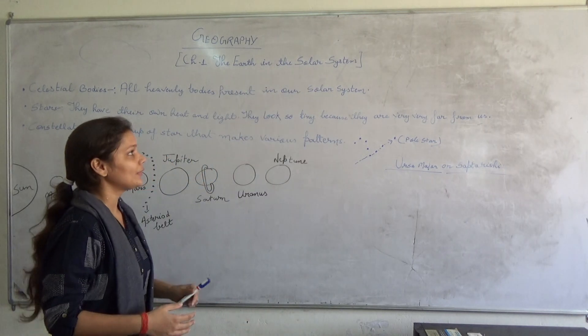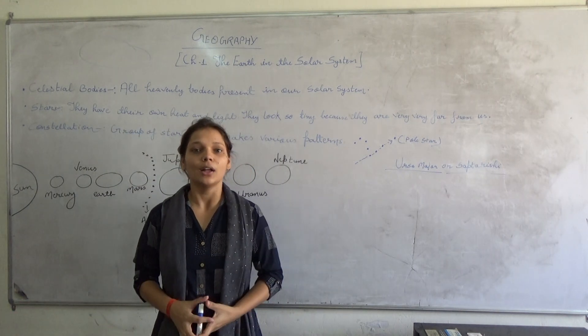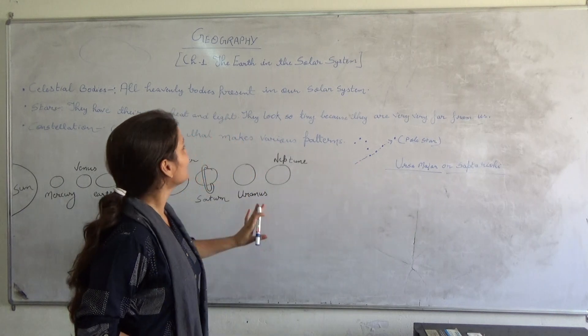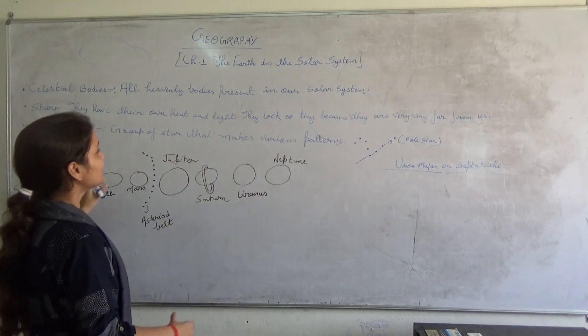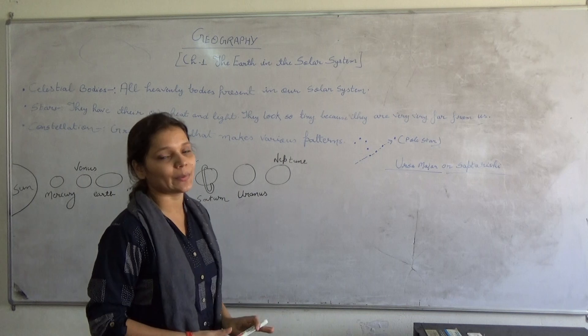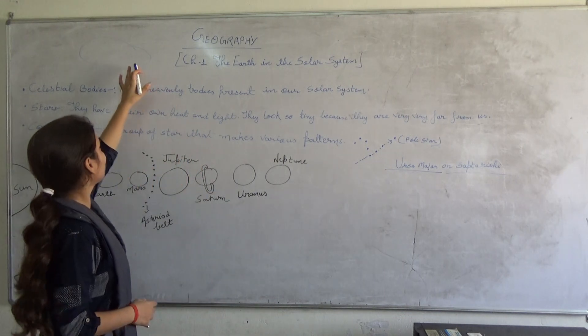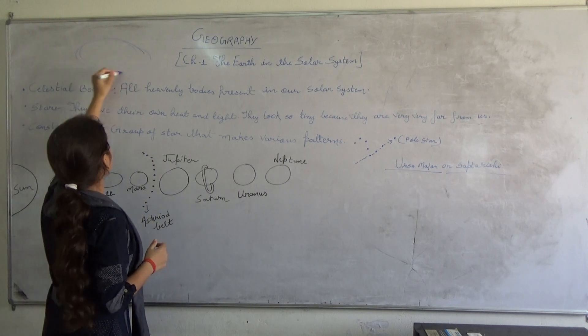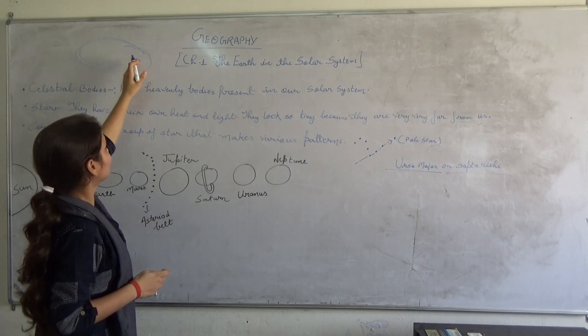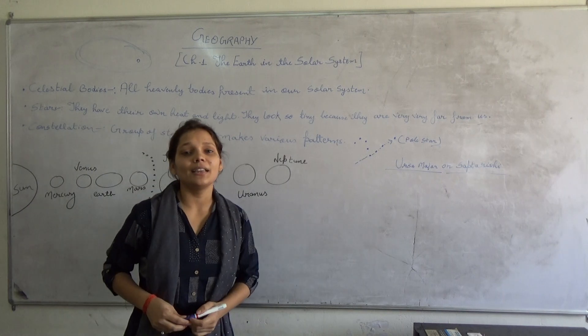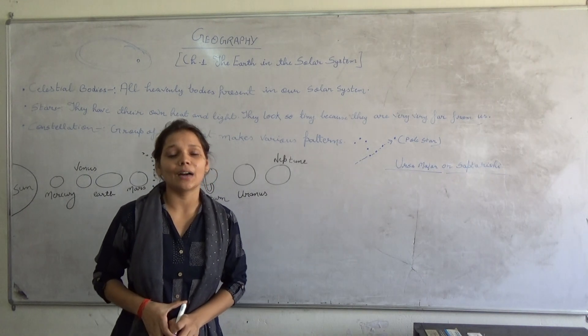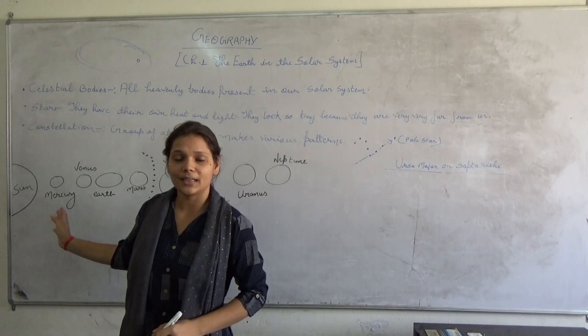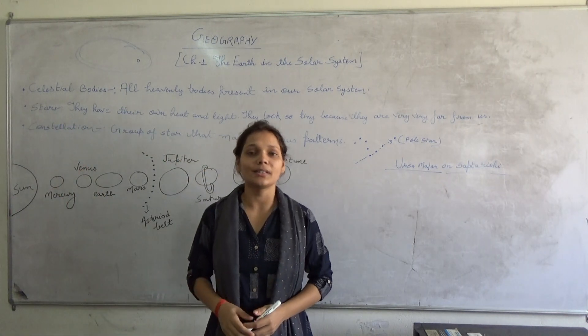The universe is huge. We can't even imagine, but suppose this wide world is universe and in this universe millions of galaxies are present. A galaxy can be of any type. In this galaxy, one such galaxy is Milky Way. In this Milky Way galaxy, our solar system is present.